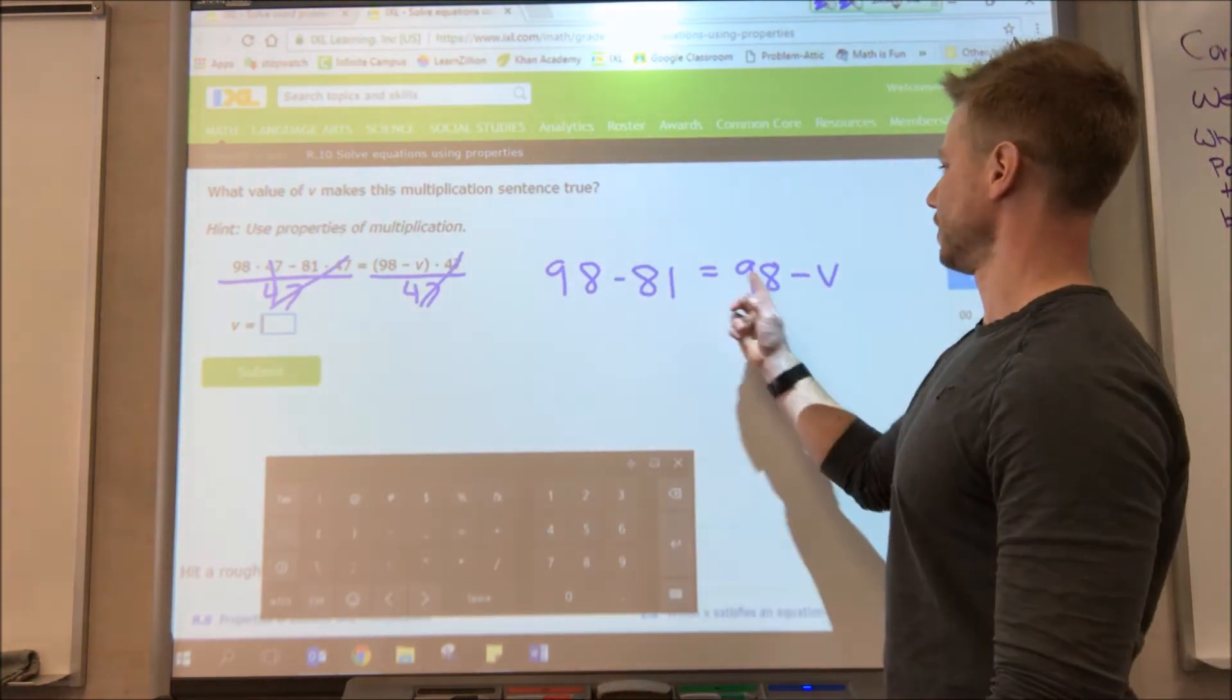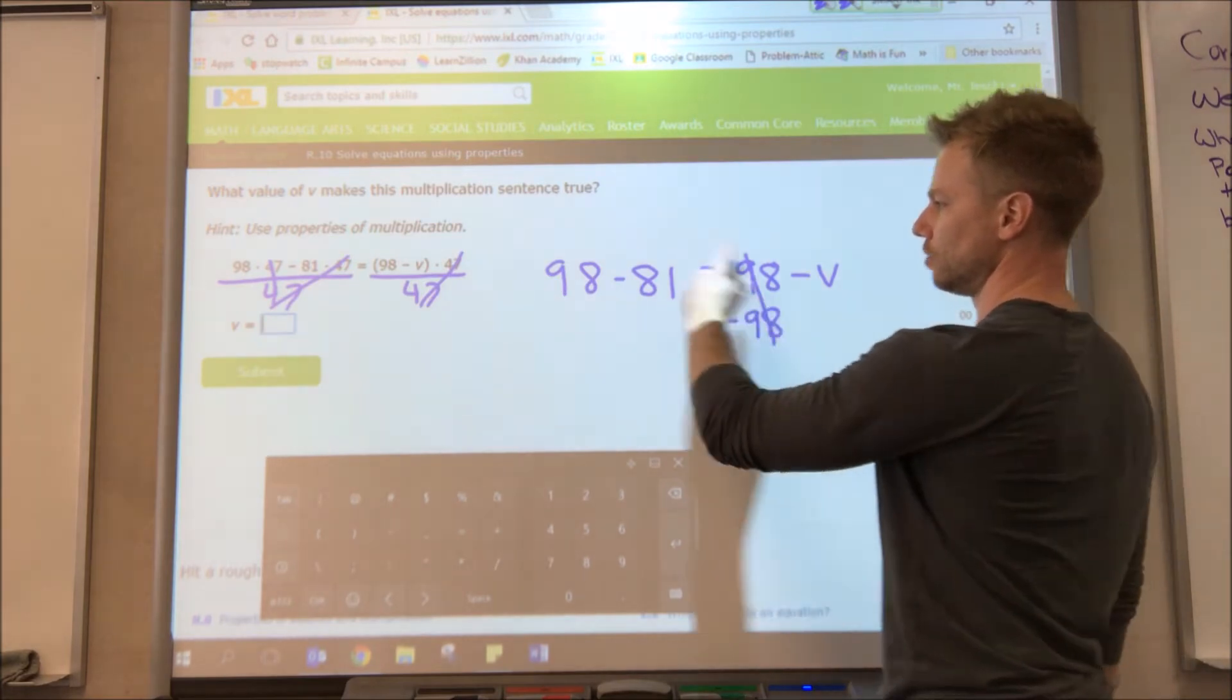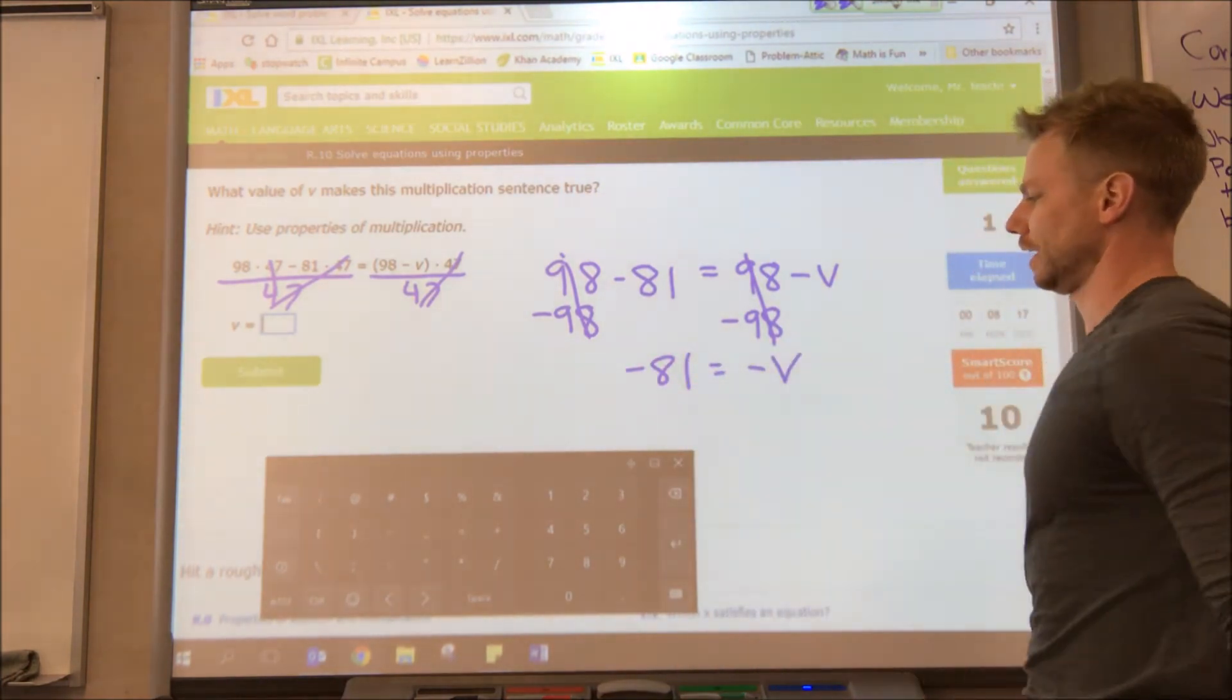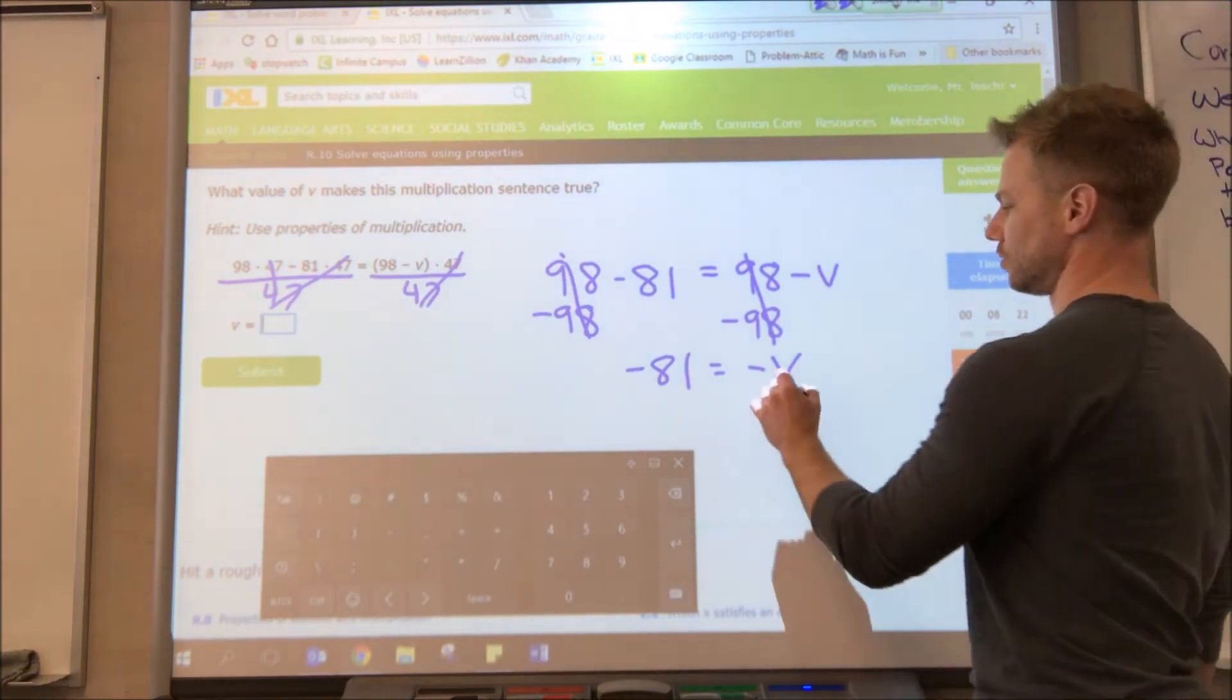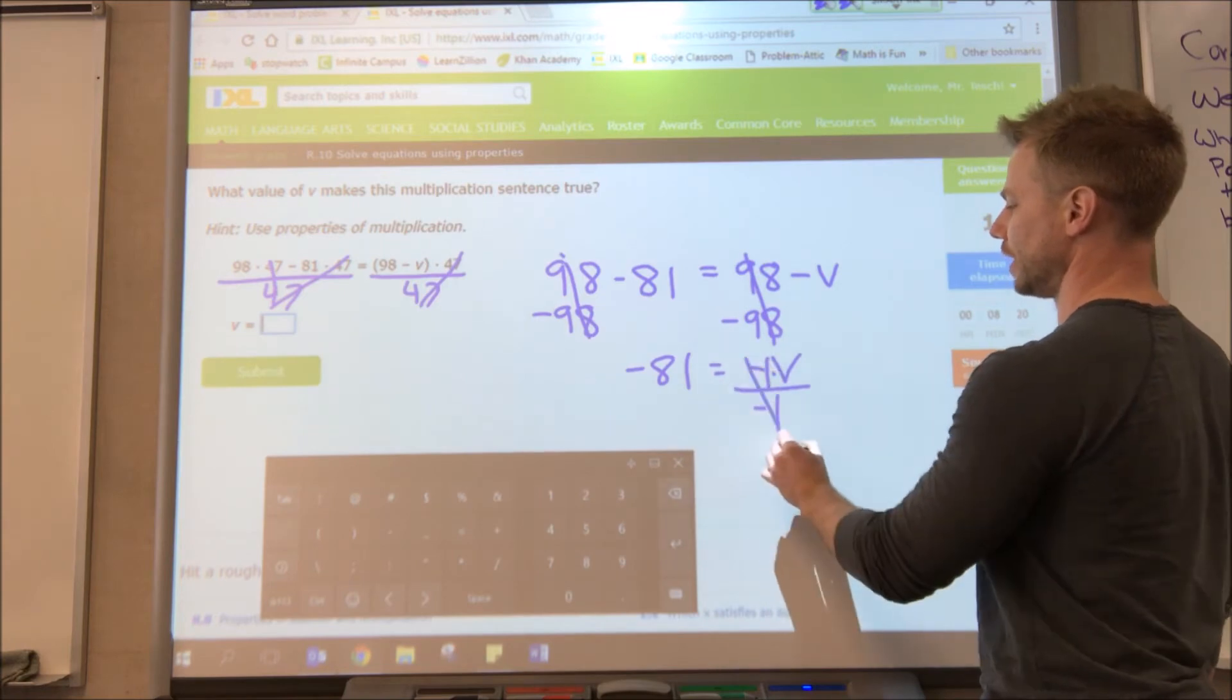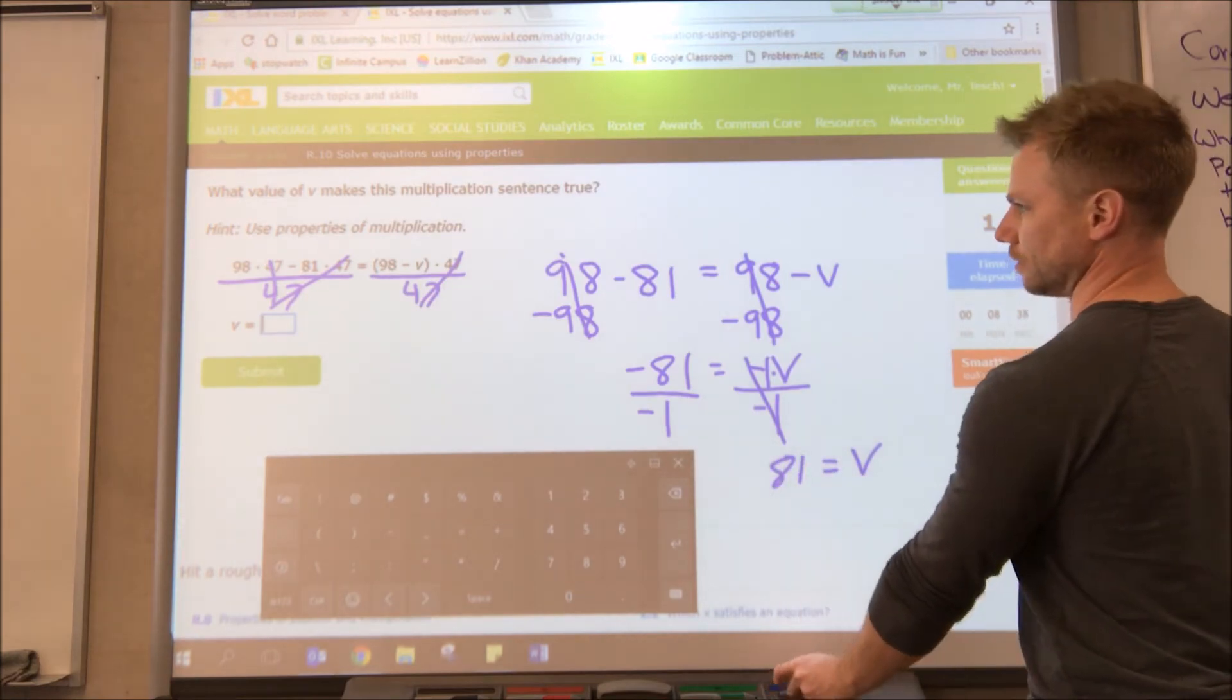All right, from this step we have a 98 on each side, so we do the opposite of what we see. I can subtract 98, those are going to go away. Do the same thing on the other side and those go away, leaving me with negative 81 equals negative v. Now we don't want a negative v, we want a positive v. So that's really saying negative 1 times v. So to undo that multiplication we divide by negative 1, divide by negative 1, making v equal a positive 81 right there.